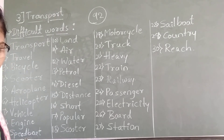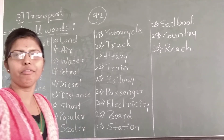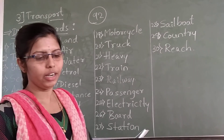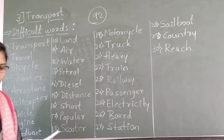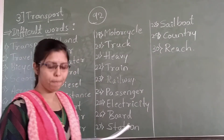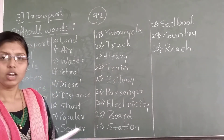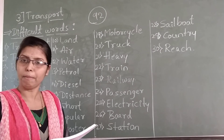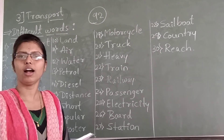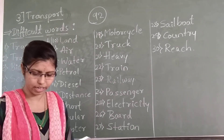Open page number 92. Now I am reading the lesson. Keep your finger where I am reading. Lesson number 3 — Transport. Travel means going from one place to another. We use different means of travel. For example, bicycle, scooter, car, bus, aeroplane, helicopter, train, etc.